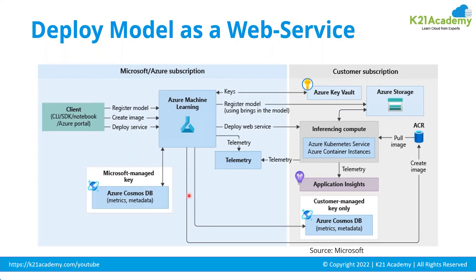When going for deployment, you can choose between Azure Container Instance or Azure Kubernetes Service. This decision depends on the kind of workload required. If it is simple and not a heavy workload, you can go for Azure Container Instance. But if you want an enterprise-level deployment solution, then you go for AKS, which is Azure Kubernetes Service.